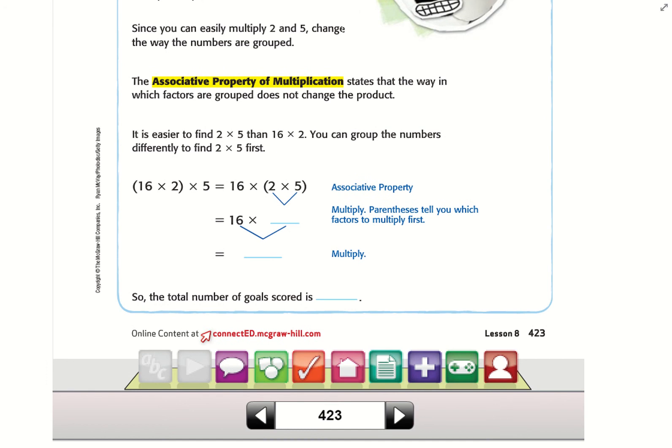It's easier to find 2 × 5 than 16 × 2. You can group the numbers differently to find 2 × 5 first. We switched the parentheses to (2 × 5) because 2 × 5 = 10, and we can do 16 × 10, which equals 160. So the total is 160.